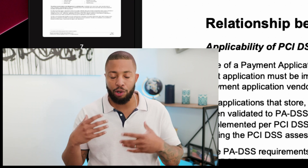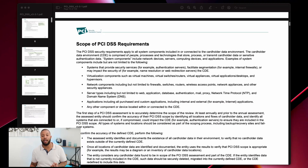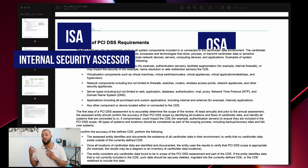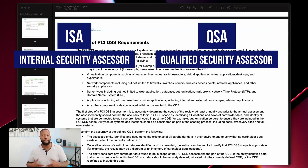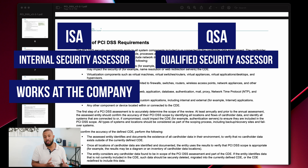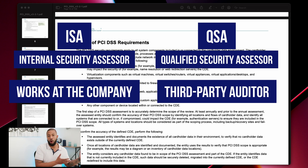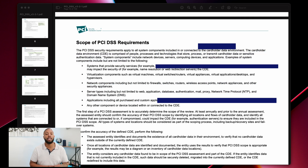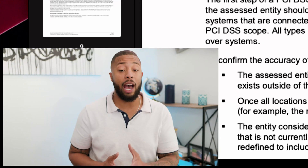You have an ISA, which is an Internal Security Assessor, and a QSA, which is a Qualified Security Assessor. The ISA works at the company as an internal employee that helps that company prepare for the security assessment. The QSA is a third-party external auditor that comes in and performs the audit to make sure the company is compliant. In my career, I was both an ISA and a QSA — and I made all the money as a QSA.